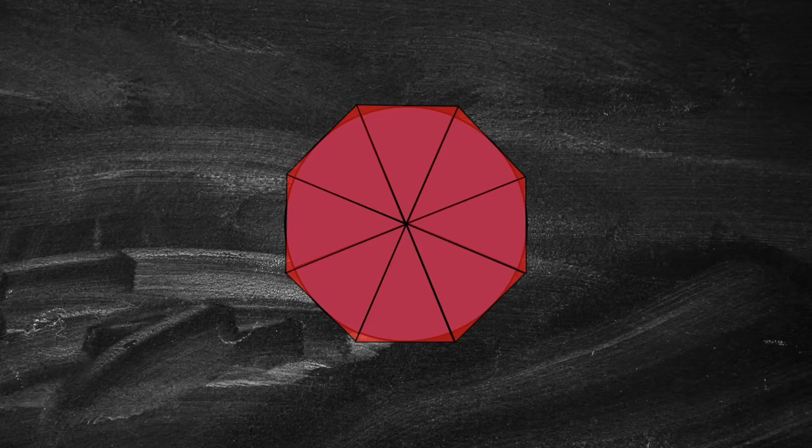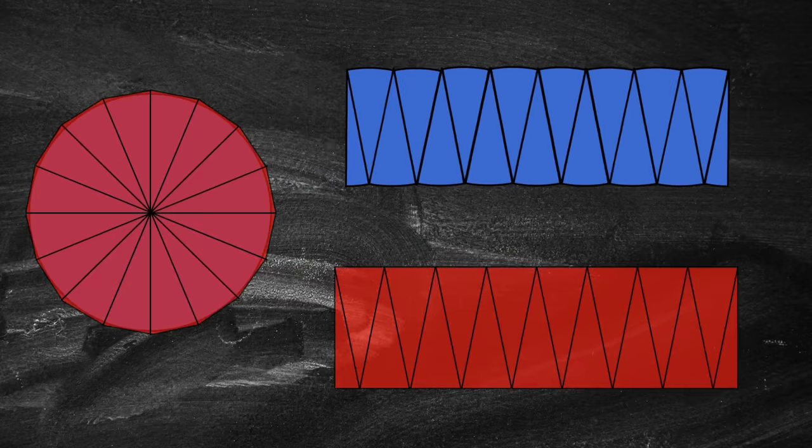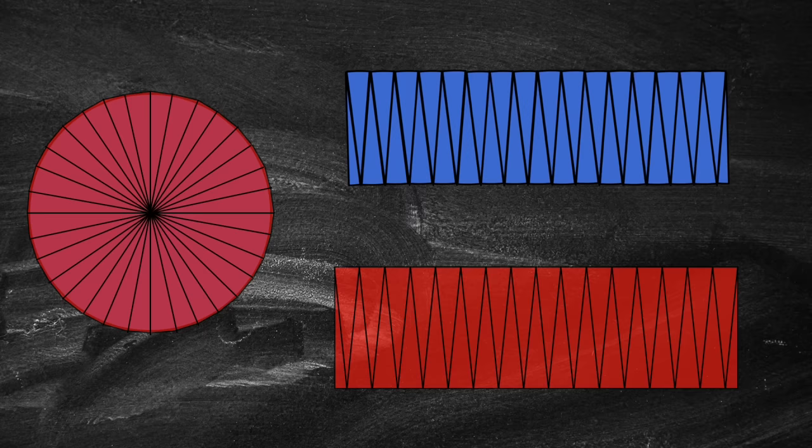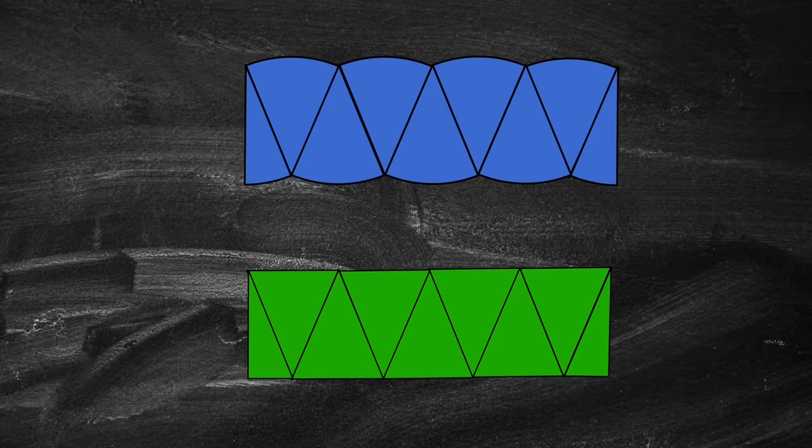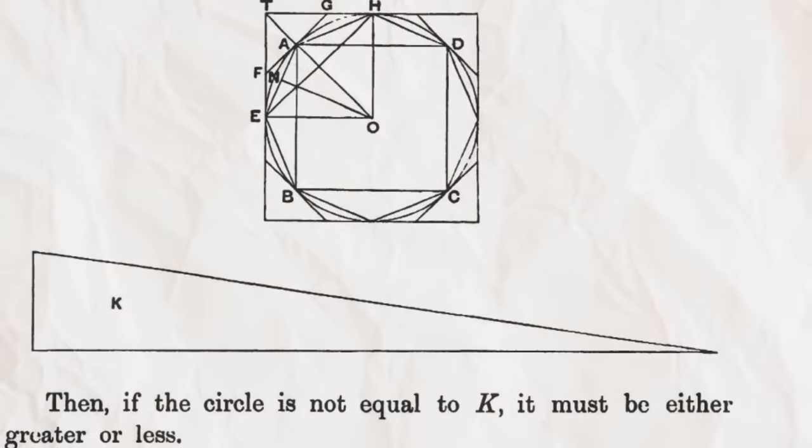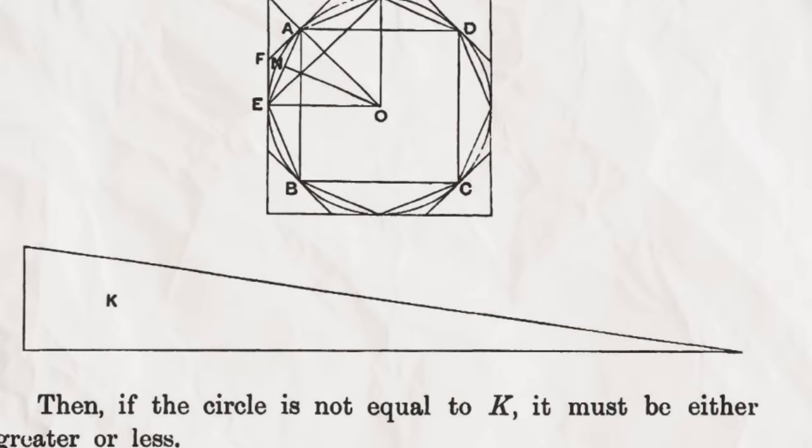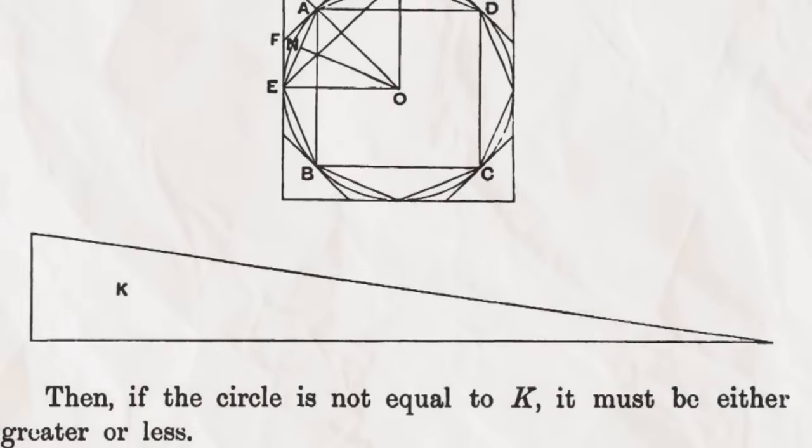He decided to base his proof on a method from Eudoxus called exhaustion, where he showed that the area of the circle was neither bigger than the rectangle nor smaller than the rectangle and therefore had to be exactly the same size. Now Archimedes actually formed the sectors of his circle into a right triangle rather than a rectangle, but I showed you the rectangle explanation in this video because it's a bit easier to visualize.